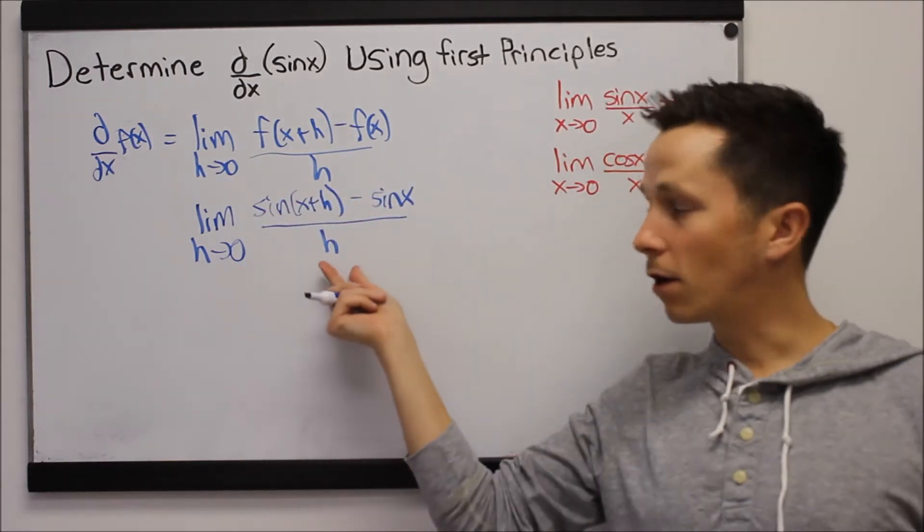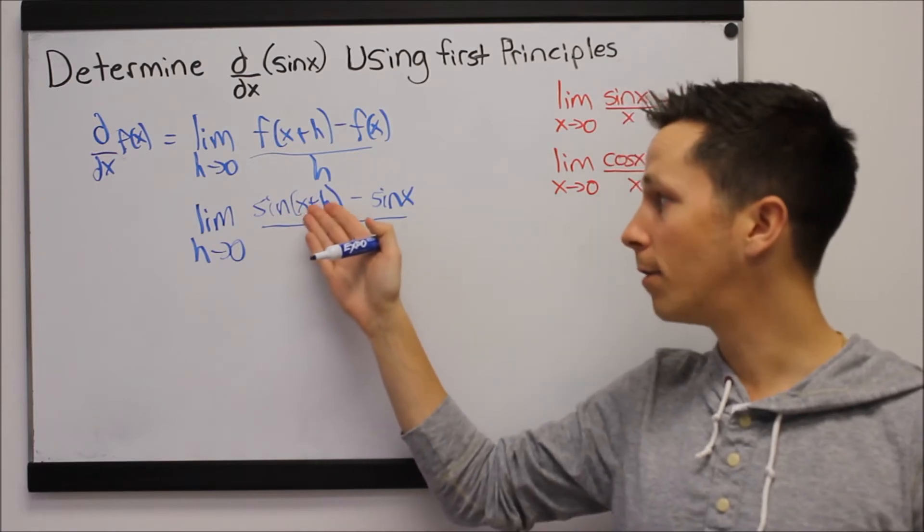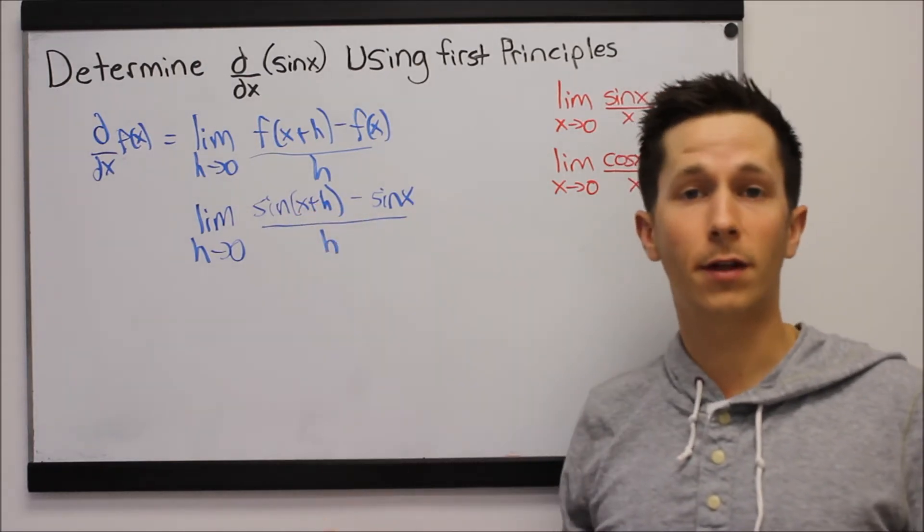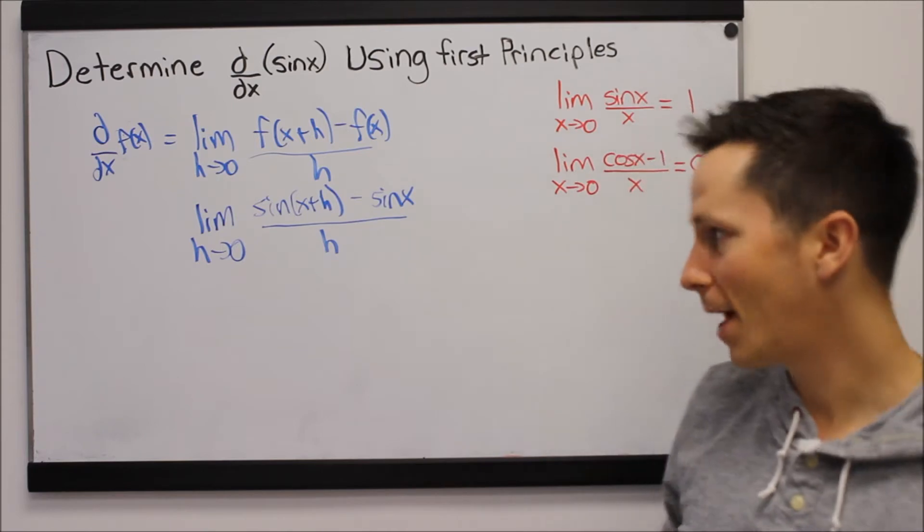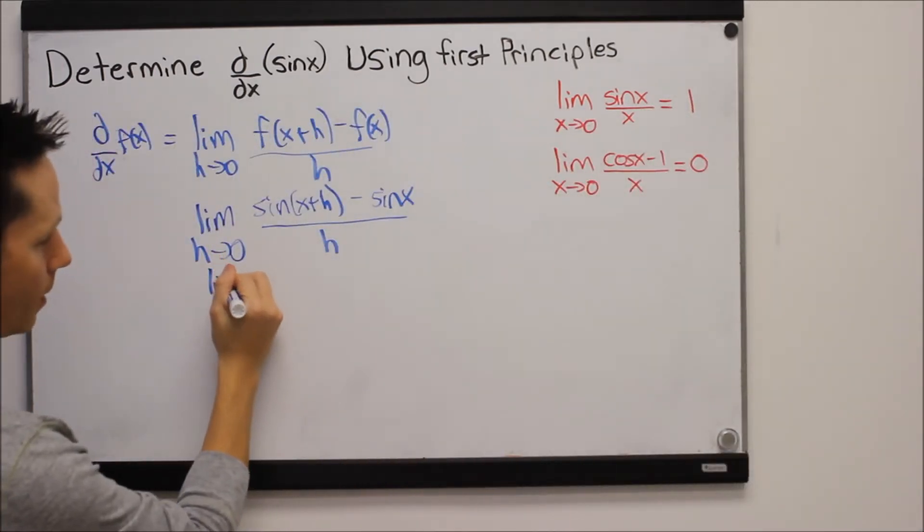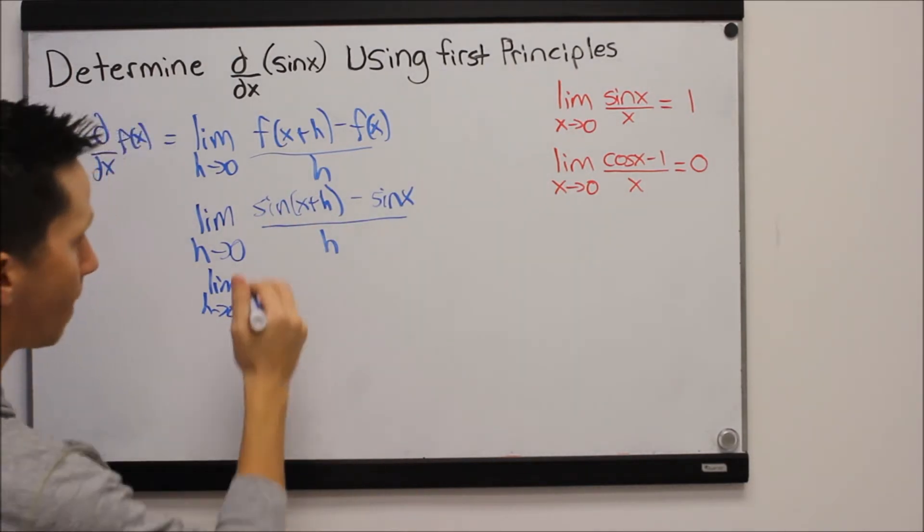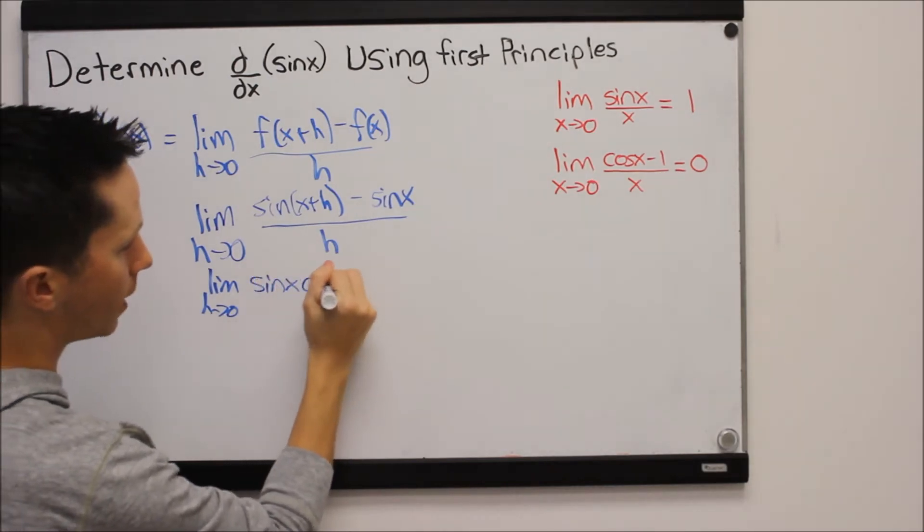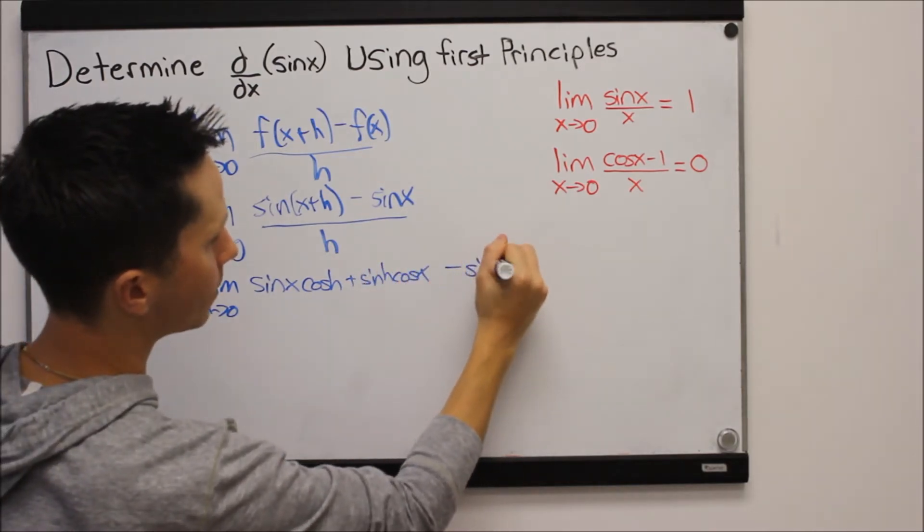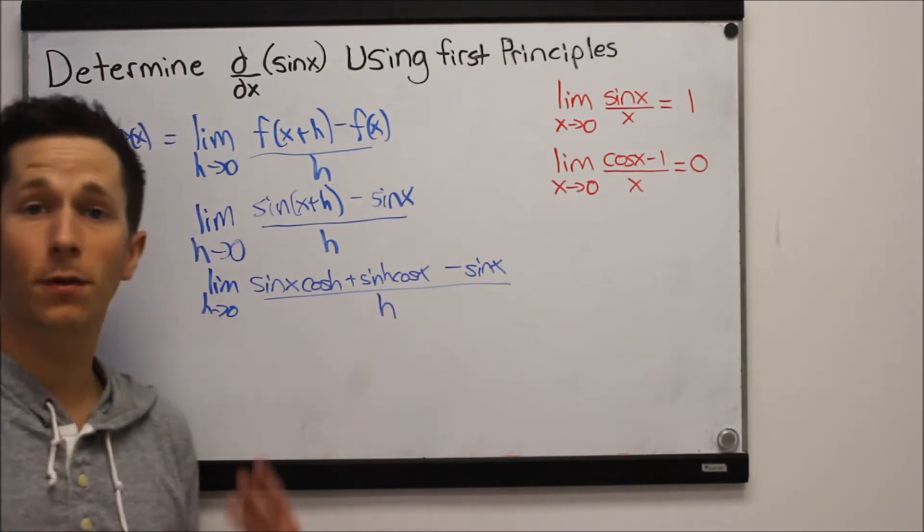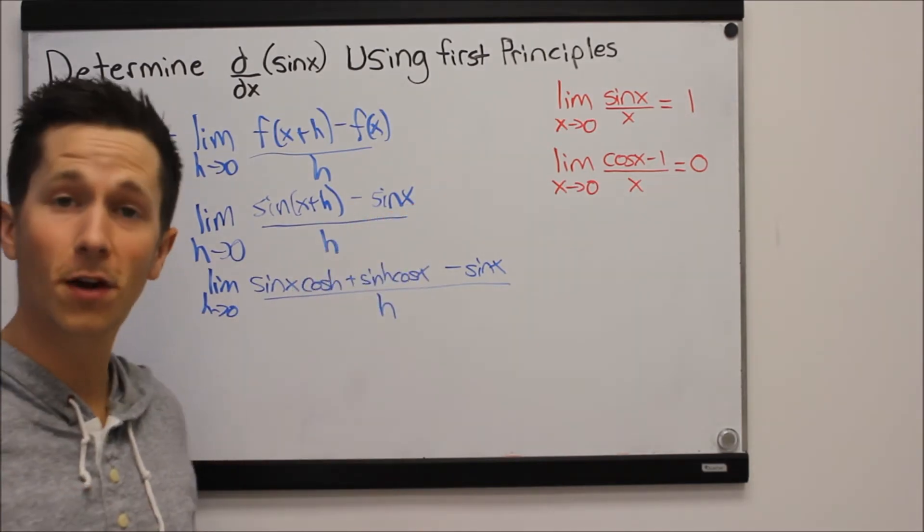This is a limit now and as long as we've got that h on the bottom we have a problem. So we have to keep expanding. What can we do on the top? We've got sine of one angle plus another angle. Well the only thing we know how to do there is use our two angle identities. So sine of a plus b, we might remember that. The limit as h goes to zero of sine of a plus b is sine a cos b plus cos a sine b. So this is sine x cos h plus sine h cos x minus the sine x we still have there all over h. That's really the only thing we could have done. So even if it looks like we're stuck we can't do anything with the h on the bottom, so we've got to use our two angle identity.